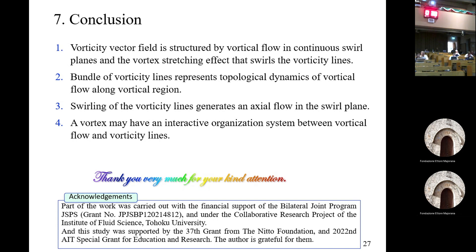In conclusion, the vortex vector field is structured by vertical flow in continuous flow planes and the vertical structure effect shapes the vorticity lines. The bundle of vorticity lines represents topological dynamics of vertical flow around vortical regions. Also, swirling of a vorticity line generates axial flow in the flow plane. Therefore, vortices may have an interactive organization system between vertical flow and vorticity lines. Thank you very much for your kind attention.